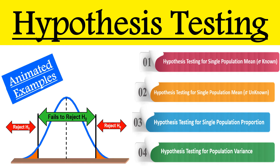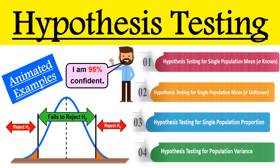This short animated video explains how to perform hypothesis testing. We will look at 4 different cases: how to perform hypothesis testing for single population mean where sigma is known, for single population mean where sigma is unknown, for single population proportion, and for population variance.